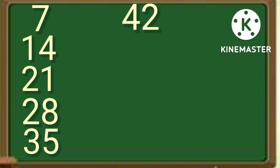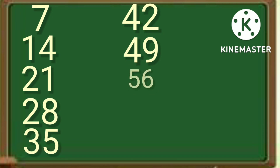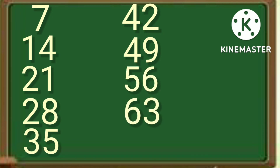7 times 6 is 42. 7 times 7 is 49. 7 times 8 is 56. 7 times 9 is 63. 7 times 10 is 70.